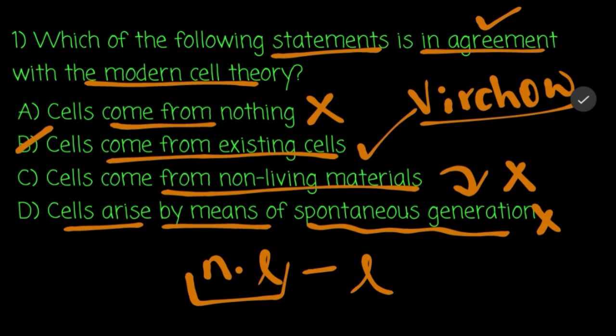Rudolf Virchow is going to be used — this is a German scientist. And he stated: omnis cellula e cellula — not in the present, but cells come from pre-existing cells.